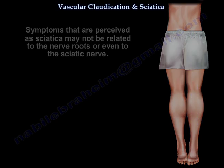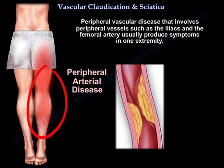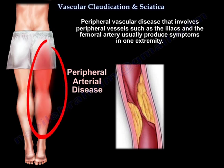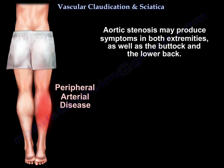Peripheral vascular disease involving peripheral vessels such as the iliac and femoral arteries usually produces symptoms in one extremity. Aortic stenosis may produce symptoms in both extremities, as well as the buttock and lower back.